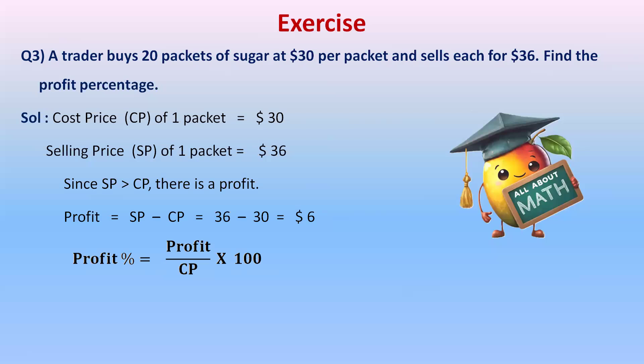The profit is 6 dollars and the cost price is 30 dollars. So 6 upon 30 multiplied by 100. Cancelling: zero cancels with zero, then 6 and 30 simplify — giving 20 percent. The trader made 20% profit.